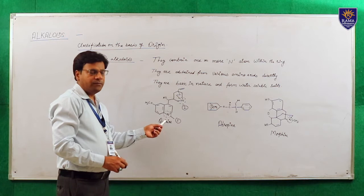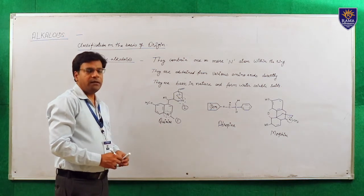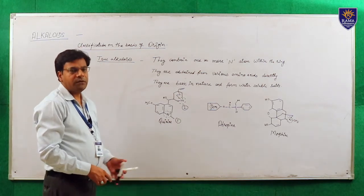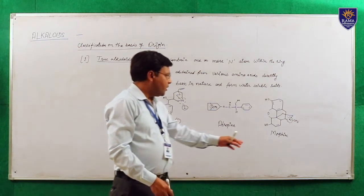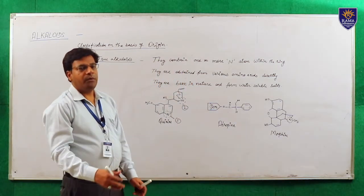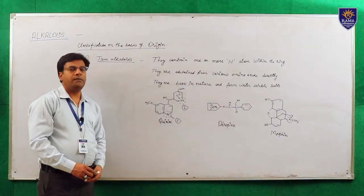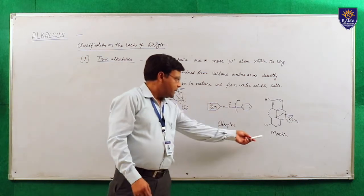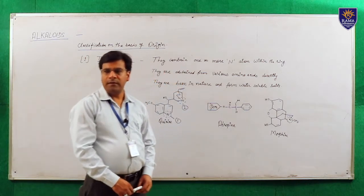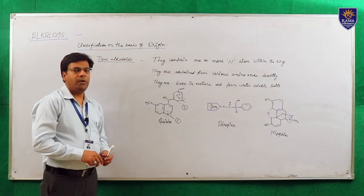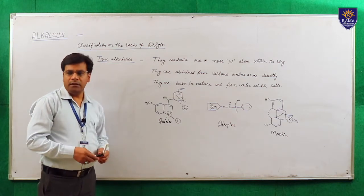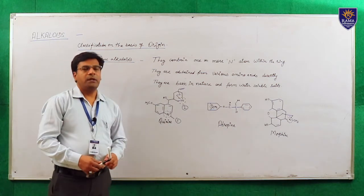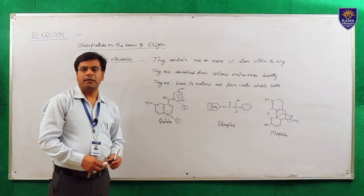Quinine is used as an anti-malarial drug and is obtained from cinchona. Atropine is obtained from Datura hyoscyamus. Morphine is obtained from the opium poppy plant, from the unripe capsule of Papaver somniferum. Morphine is a narcotic drug and its cultivation, collection, and all functioning is done under the regulation and restriction of the Government of India under the Narcotic and Psychotropic Substances Act 1985.